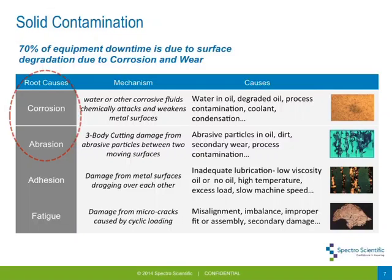Let's go to the most common types of contamination. When we talk about solid contamination, we're referring to particles that get into the oil. The most common is sand and dirt getting in, which can lead to abrasive wear, free body damage, and wear debris. You could also have debris generated as a result of corrosion from degraded oil, or soot contamination. The key takeaway is that 70% of equipment downtime is due to some form of surface degradation from corrosion and wear particulate, making it often the first point of contact for contamination control programs.